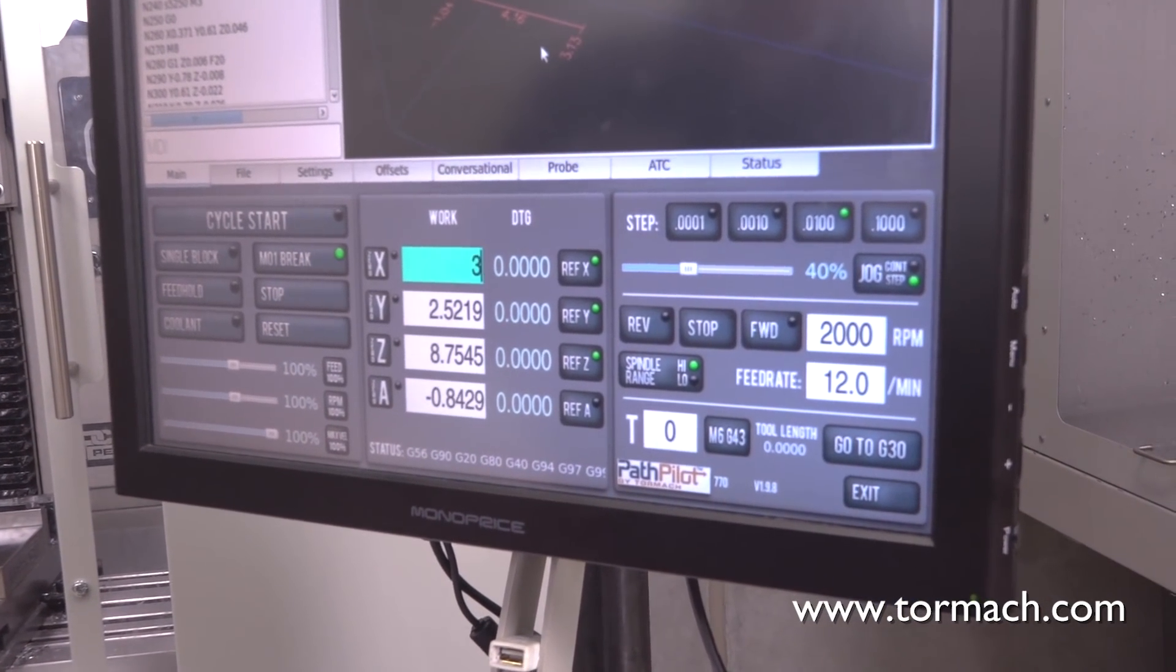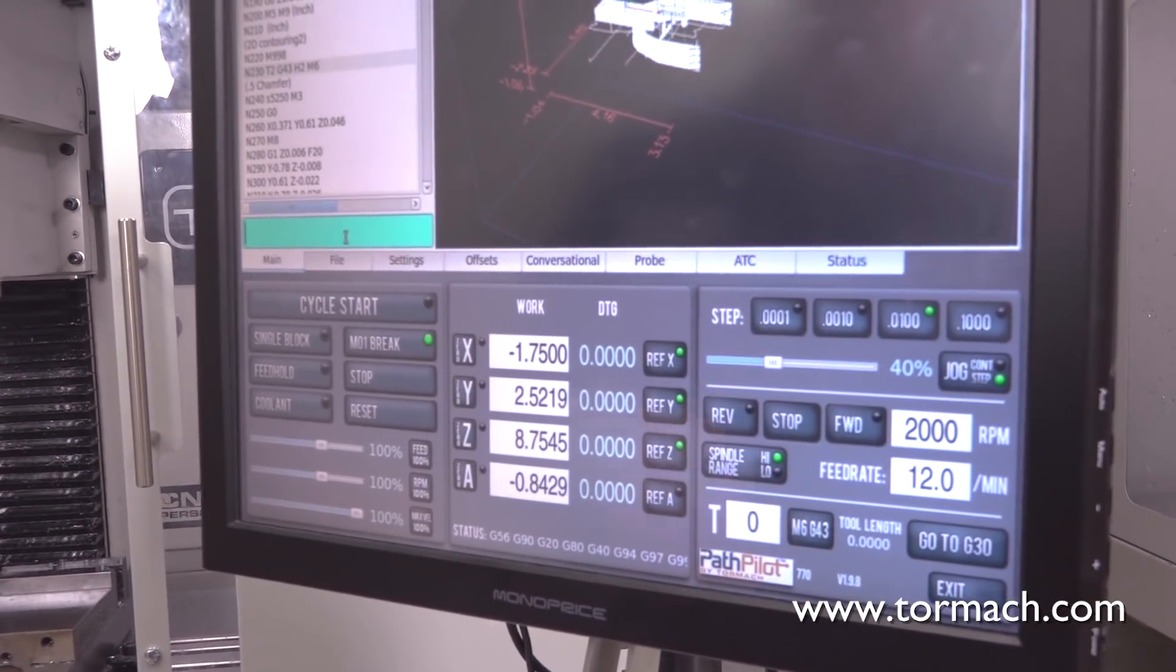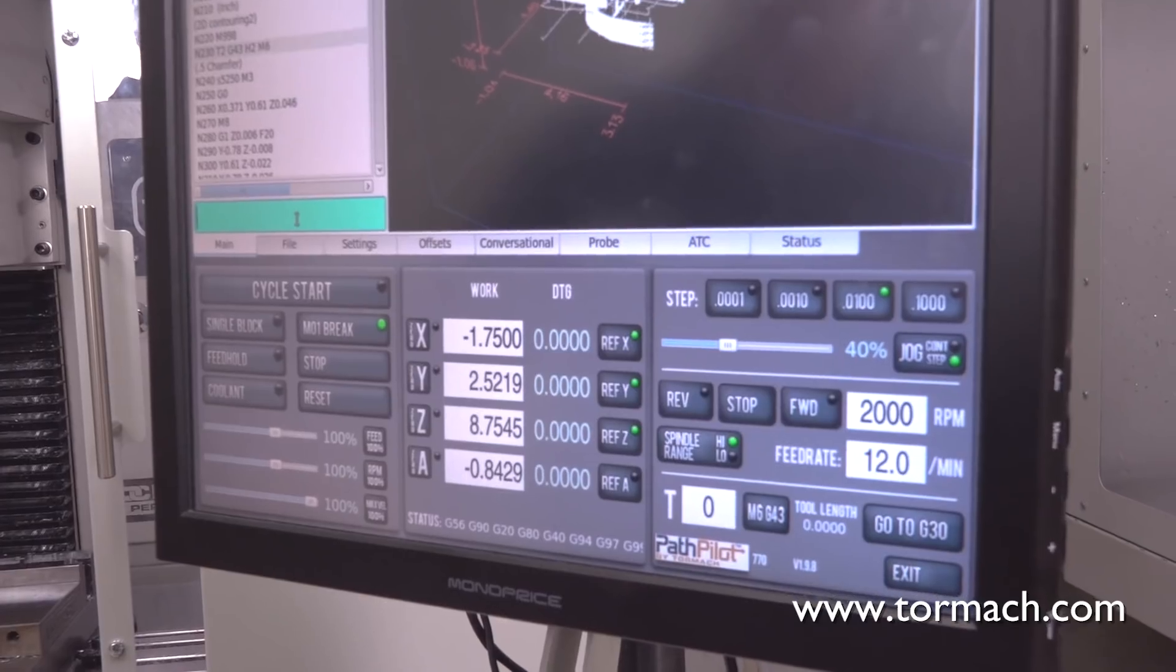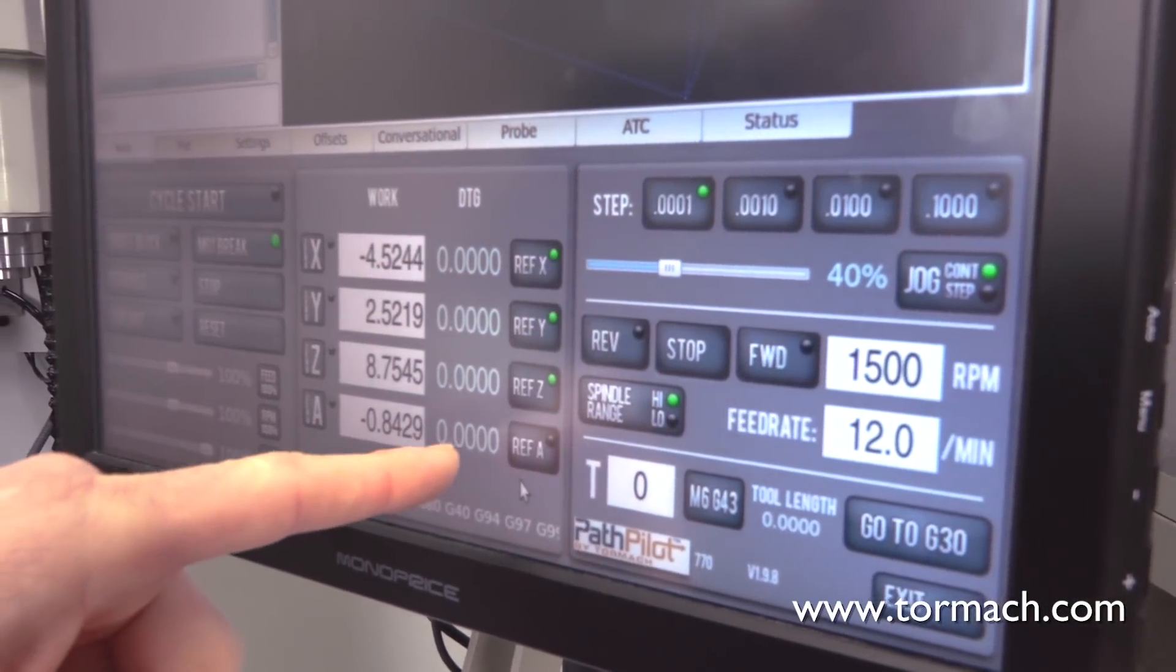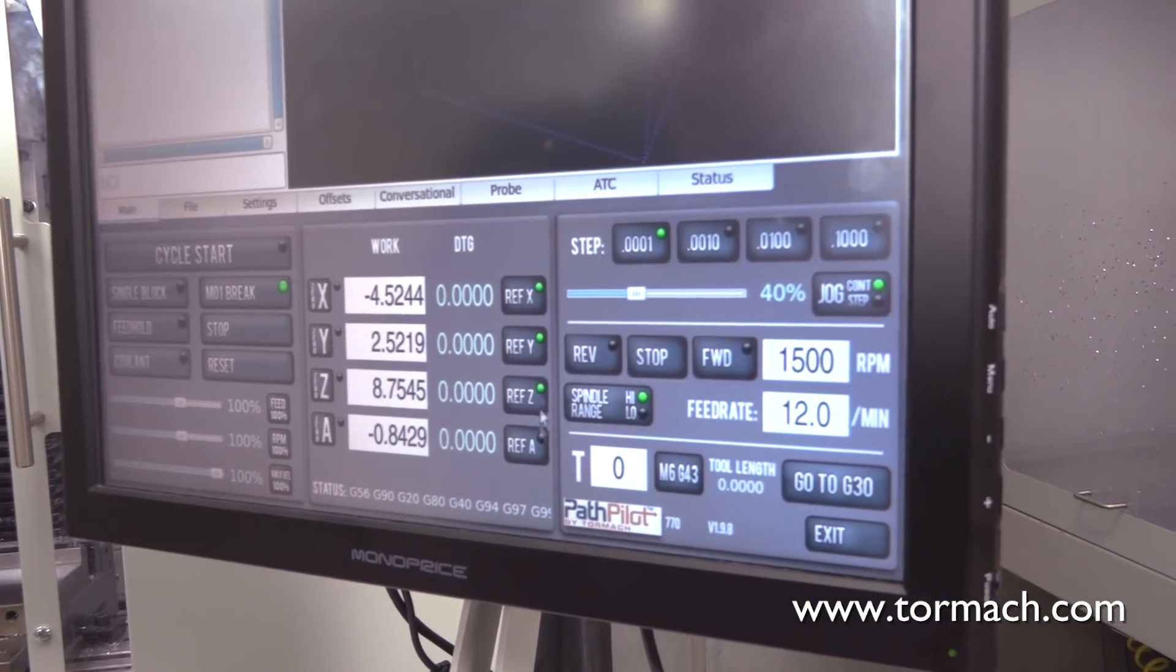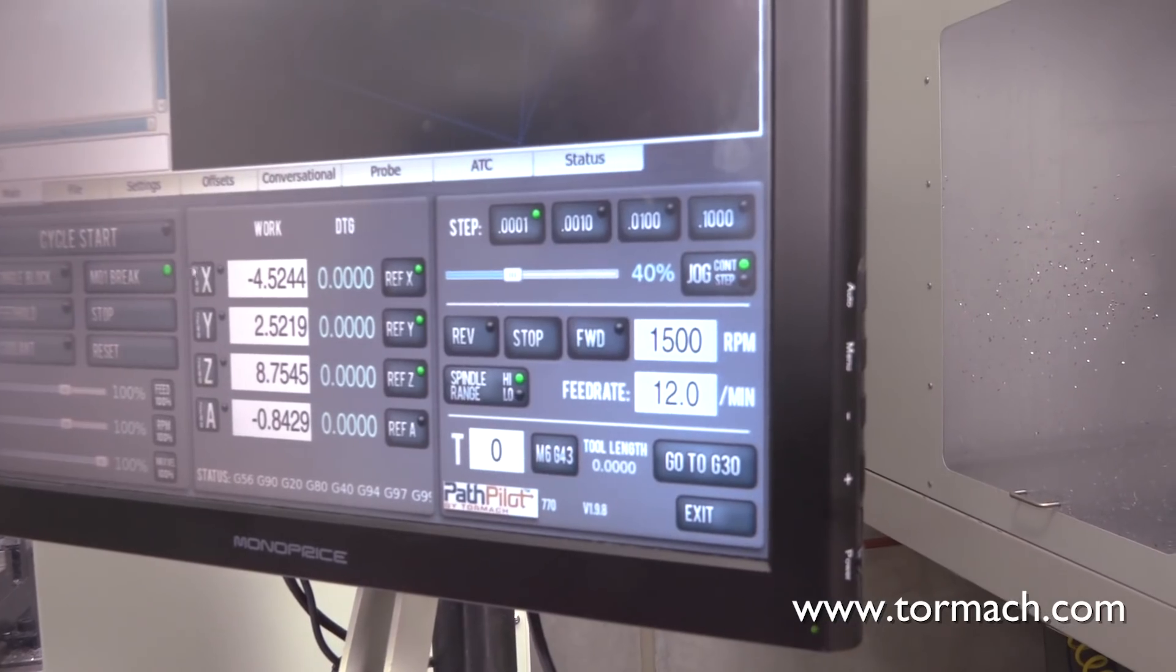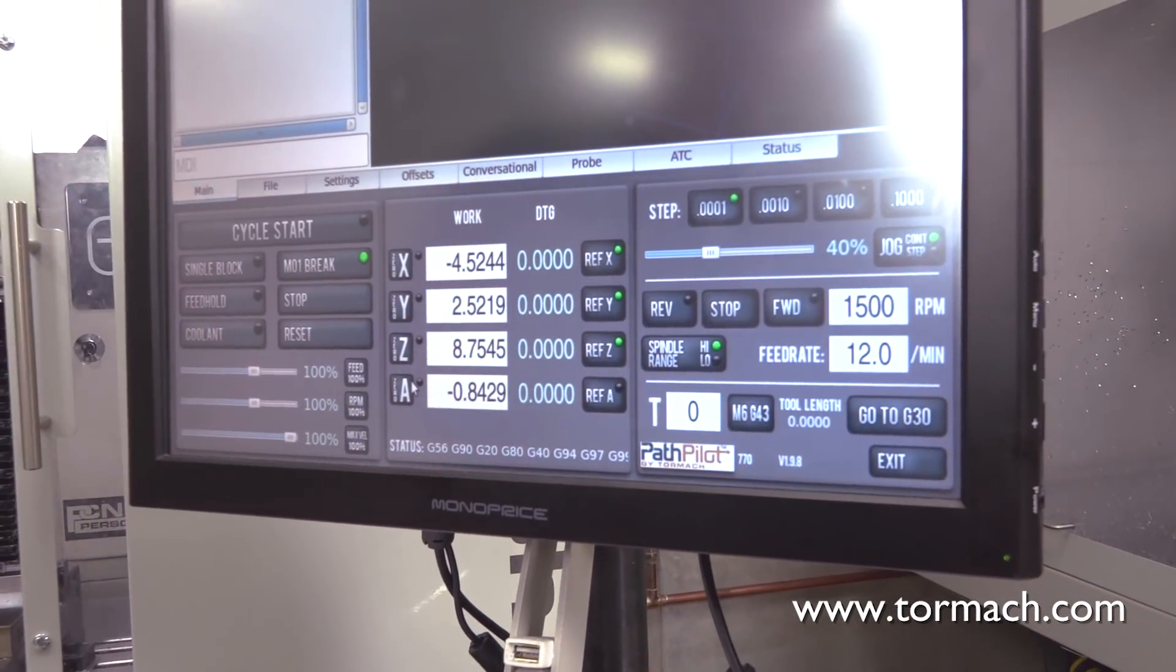One thing you do want to be aware of, you really want to hit enter when you're done in here. If I type something in here and then I go somewhere else, that value doesn't take. These labels here, DTG is distance to go. It displays the distance left in any remaining move. Right now, it's not moving at all, so they're all zero. And these are your reference buttons, buttons to zero out your work offset coordinate system. Like I said, that's covered in another video.